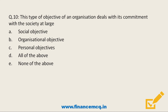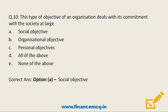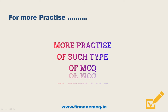Next question: this type of objective of an organization deals with its commitment to society at large. Option A: social objective. Option B: organizational objective. Option C: personal objective. The correct answer is Option A — social objective. Organizational objectives deal with utilizing human and material resources for survival, profit, and growth. Personal objectives deal with satisfying the diverse needs of individuals in the organization, such as good salaries, peer recognition, or personal growth and development.